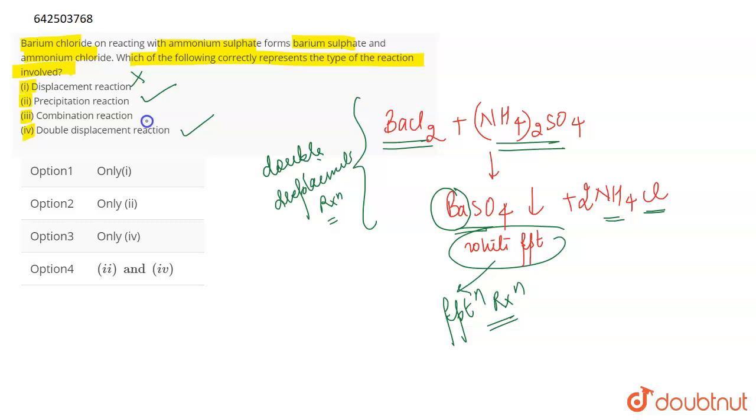It is not just displacement and it is not combination. It is double displacement reaction and precipitation reaction by precipitation because the formation of a precipitate is taking place in this reaction. So the correct statements will be second and fourth. The correct names will be second and fourth which is given in option number four. So option number four will be the correct answer for this question.